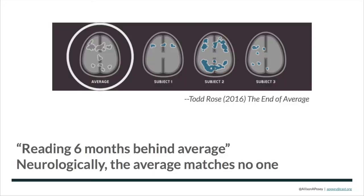I'm happy that Joni mentioned the myth of the average, because I have a little brain picture to support it. Recently, I heard the story of a little boy who is reading six months behind average. And of course, immediately I was like — average? We know that it's a myth. If you take a look at the circled brain, that's the average brain, and then you take a look at all the individuals, you can see the average matches no one. So he is basically six months behind a mythological no one.